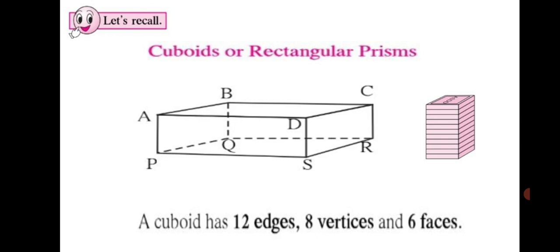Then how many vertices does it have? You can see each vertex named in this figure: vertex A, vertex B, C, then D. Similarly below you can see vertex P, vertex Q, vertex R and vertex S. So altogether a cuboid has 8 vertices.